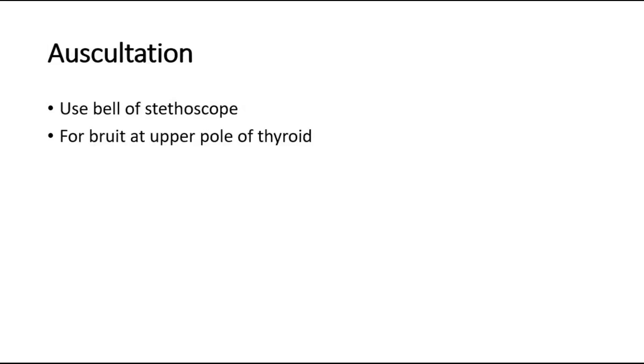For auscultation, we use the bell of the stethoscope and listen over the upper pole of the thyroid glands to listen for a bruit.